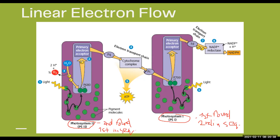For Photosystem 2, the same principle applies. First, a photon hits a chlorophyll B molecule or pigment in the light harvesting complex. This violet area here is the light harvesting complex, while this lighter violet is the reaction center complex. The photon hits the chlorophyll molecule, the energy passes to another, and so on, until it reaches the special pair of chlorophyll A molecules in the reaction center complex. In Photosystem 2, that special pair is called P680.